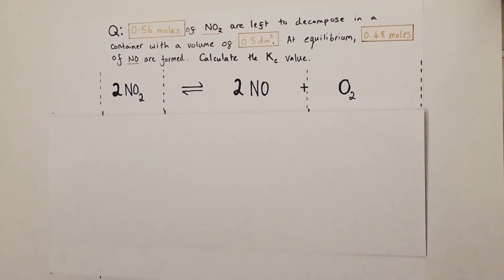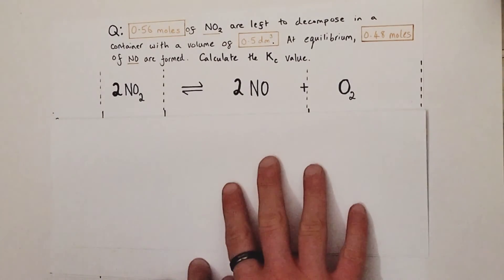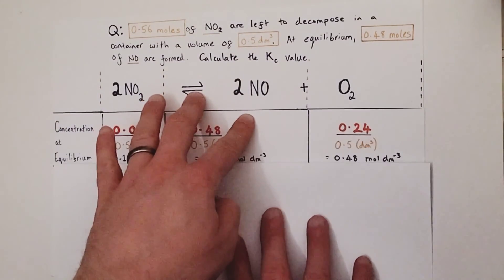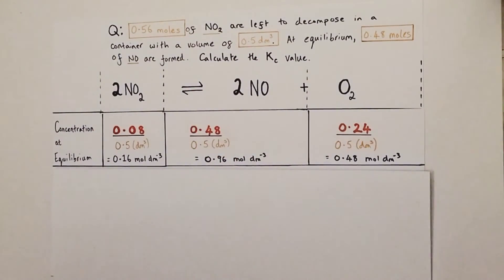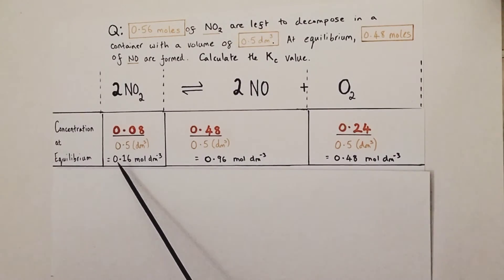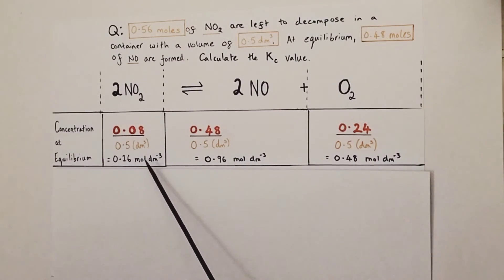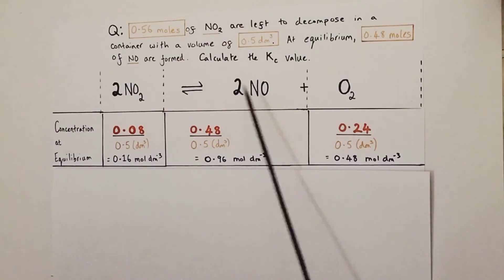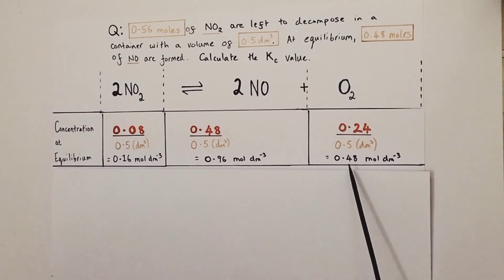The Kc expression works in concentrations, not moles. Concentrations equal moles over volume, so we divide all mole values by the volume of 0.5 litres. That gives us 0.16 mol/L of nitrogen dioxide, 0.96 mol/L of nitrogen monoxide, and 0.48 mol/L of oxygen.